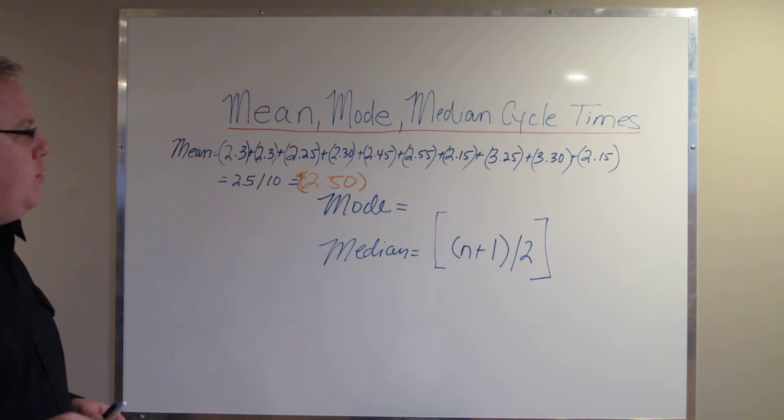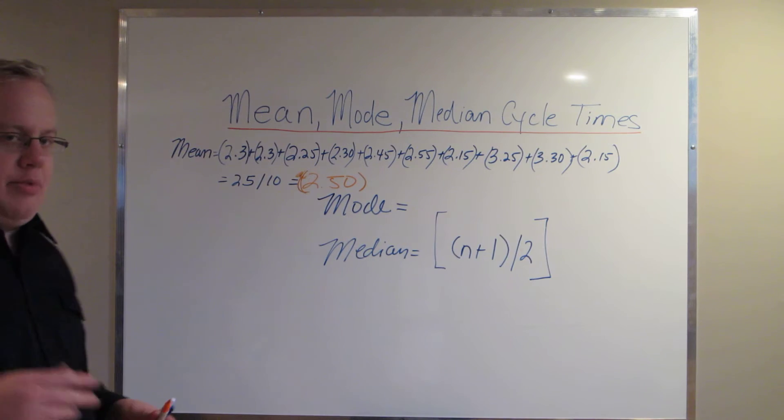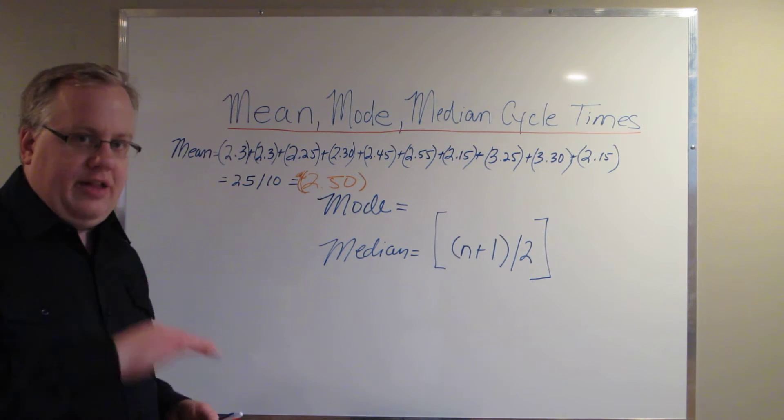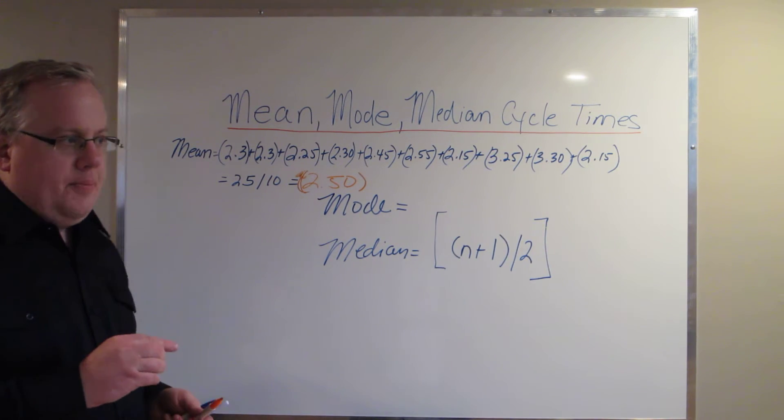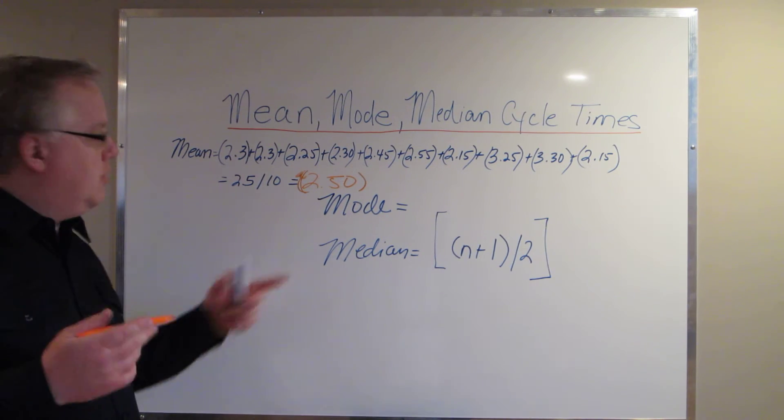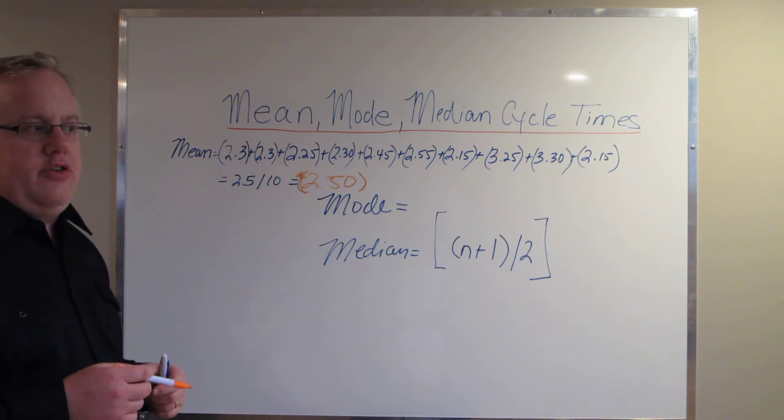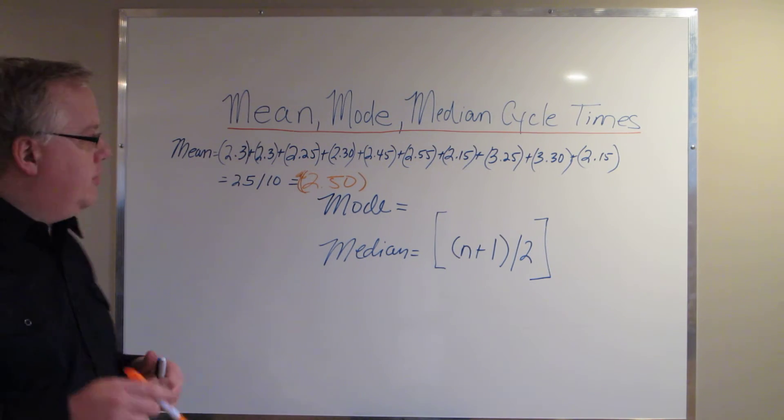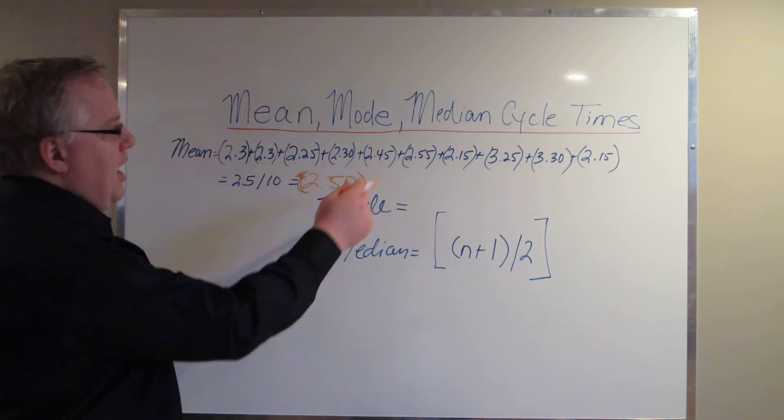Now the mode cycle time is basically the time that occurs the most frequently inside of the sample portion. In this particular one, we're talking about 10 sample portions. So what you're trying to do there with the mode cycle time is you're trying to find the one time that occurs the most frequently.